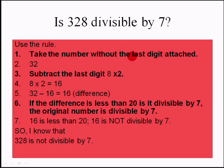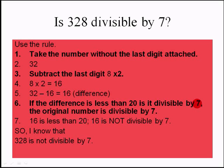Use the rule: take the number without the last digit. Remove the last digit 8 — 32 is left out. Subtract the last digit times 2: 8 times 2 is 16. So 32 minus 16 is 16. Is 16 divisible by 7? The difference is less than 20, yes, but is it divisible by 7? No — it is not divisible by 7. So the original number 328 is not divisible by 7.